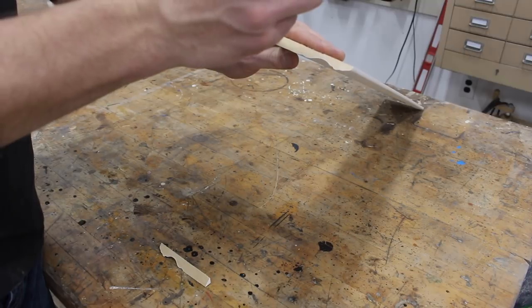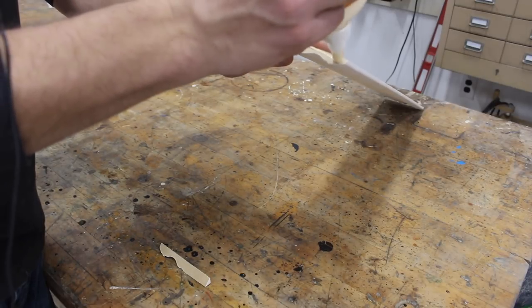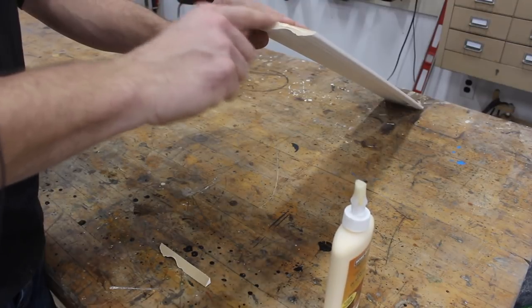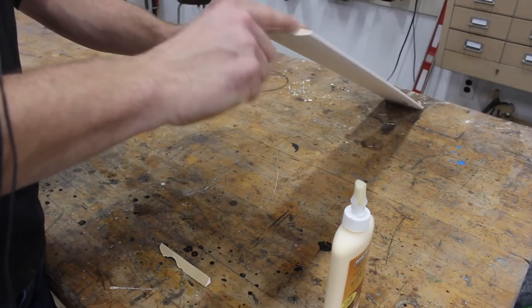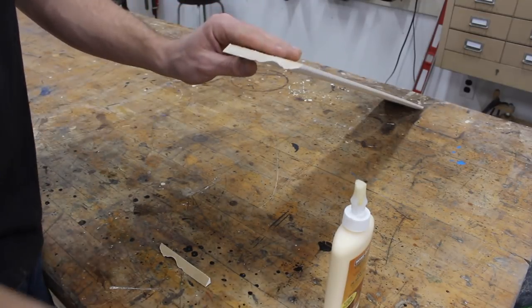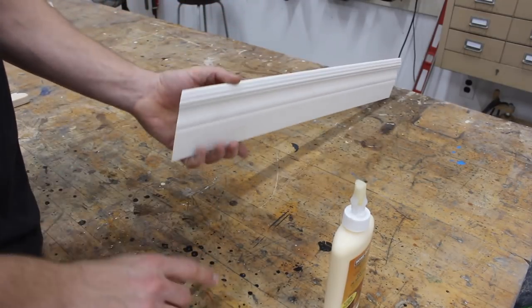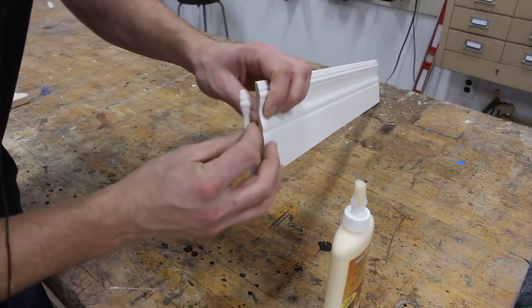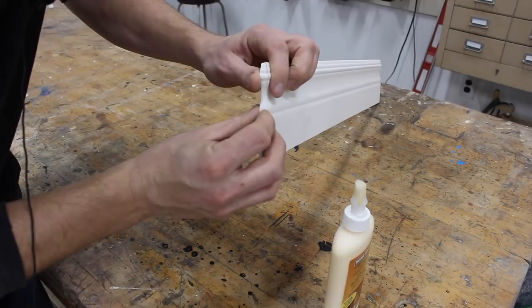Now this is MDF, and MDF likes to soak up glue, so put quite a bit on and then smear it on with your finger. And just put it on there.